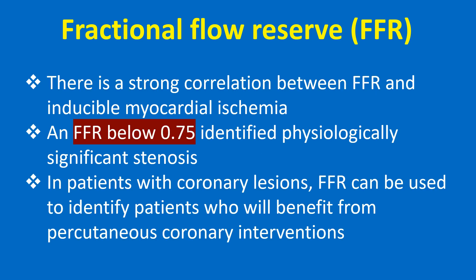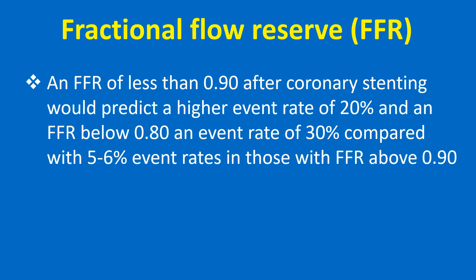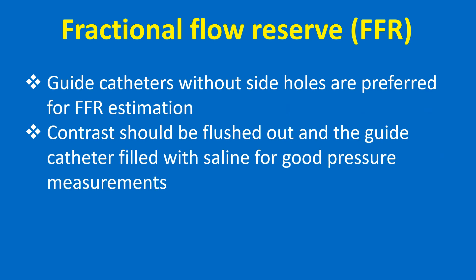There is a strong correlation between FFR and inducible myocardial ischemia. An FFR below 0.75 identifies physiologically significant stenosis. In patients with coronary lesions, FFR can be used to identify patients who will benefit from percutaneous coronary interventions. An FFR of less than 0.90 after coronary stenting would predict a higher event rate of 20%, and an FFR below 0.8 an event rate of 30%, compared with 5-6% event rates in those with FFR above 0.9.